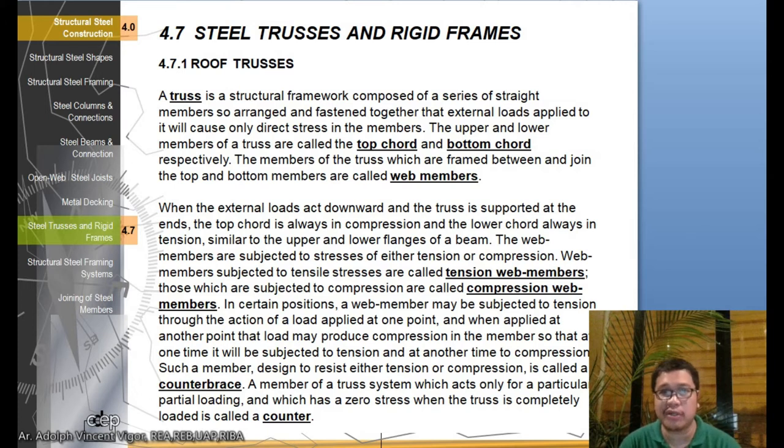A truss is a structural framework composed of a series of straight members so arranged and fastened together that external loads applied to it will cause only direct stress to the members. The upper and lower members of the truss are the top chord and bottom chord. The members which are framed between and join the top and bottom members are called the web members.